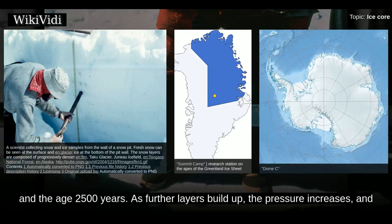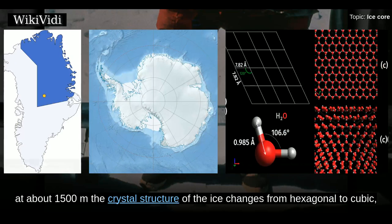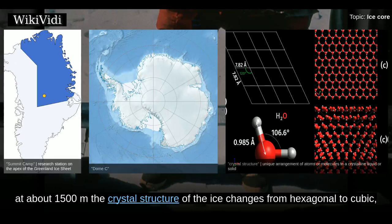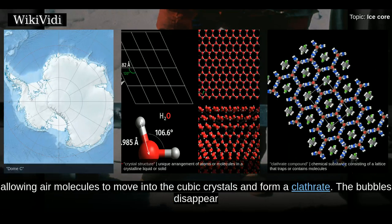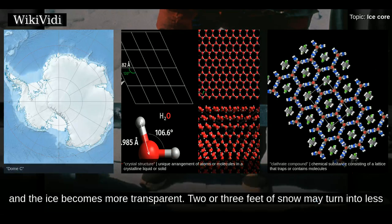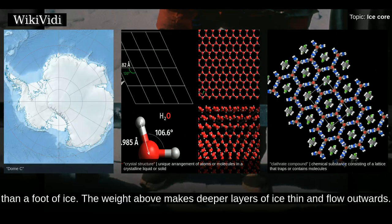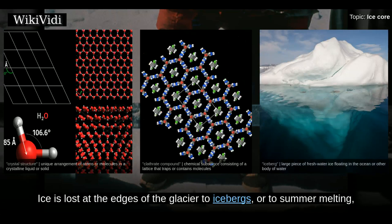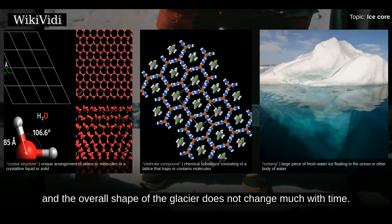As further layers build up the pressure increases, and at about 1,500 meters the crystal structure of the ice changes from hexagonal to cubic, allowing air molecules to move into the cubic crystals and form a clathrate. The bubbles disappear, and the ice becomes more transparent. Two or three feet of snow may turn into less than a foot of ice. The weight above makes deeper layers of ice thin and flow outwards, and ice is lost at the edges of the glacier to icebergs or to summer melting.